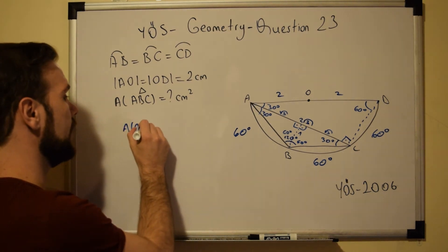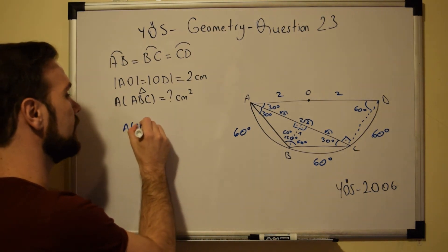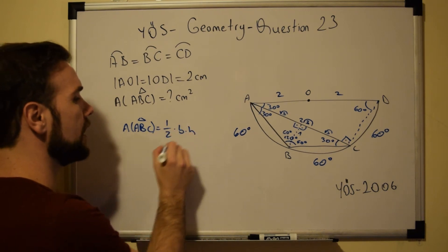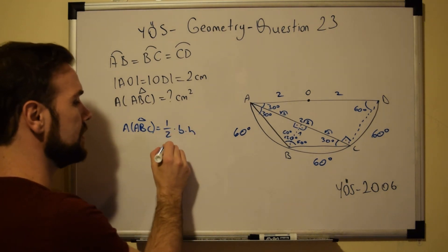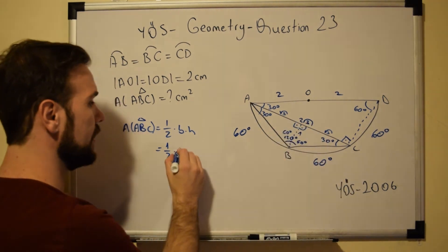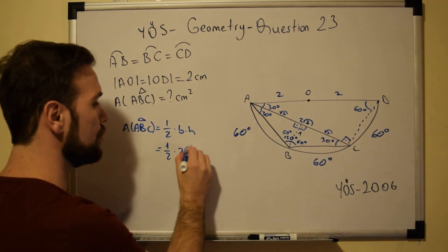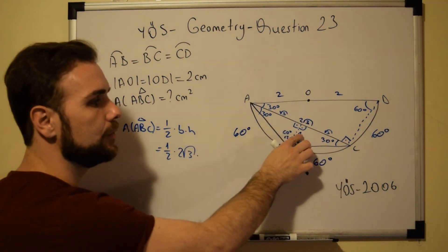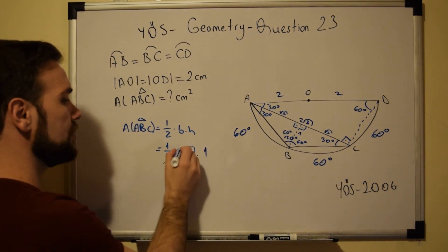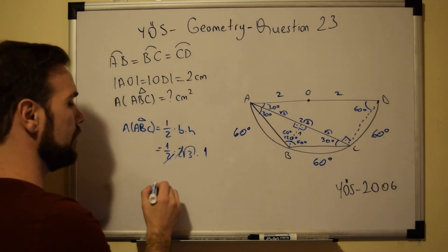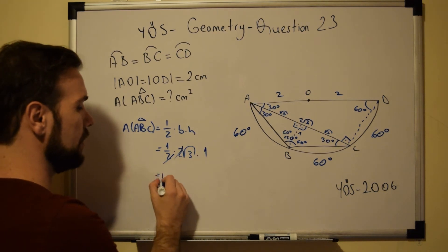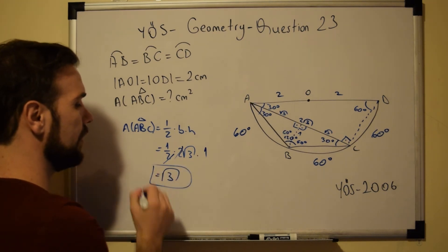The area of triangle ABC equals ½ × base × height = ½ × 2√3 × 1. The 2s cancel, leaving √3. The area of triangle ABC is √3.